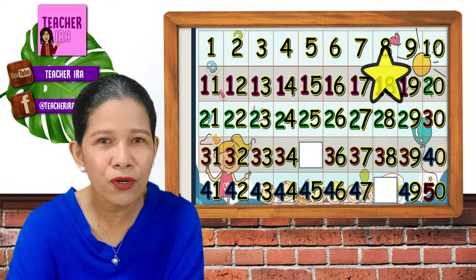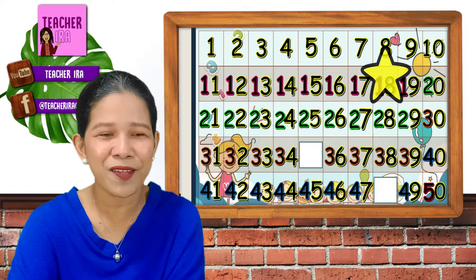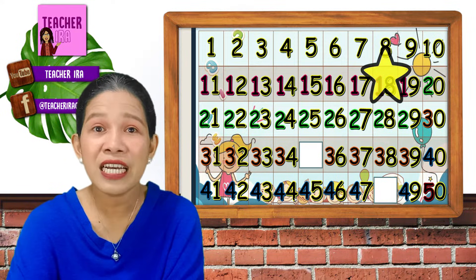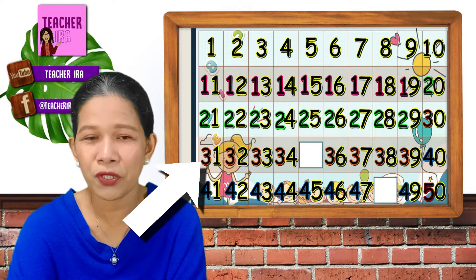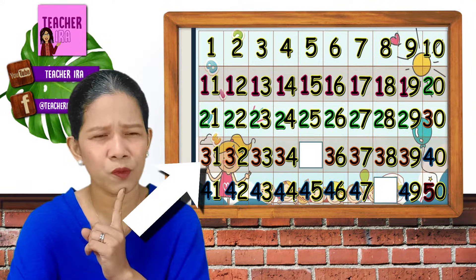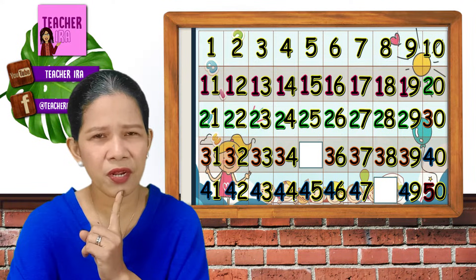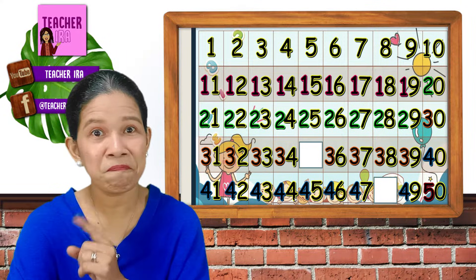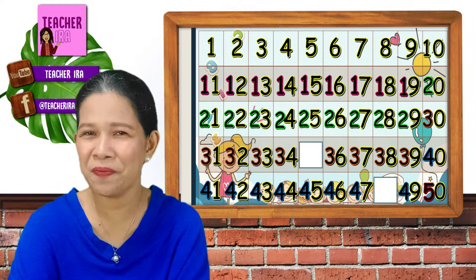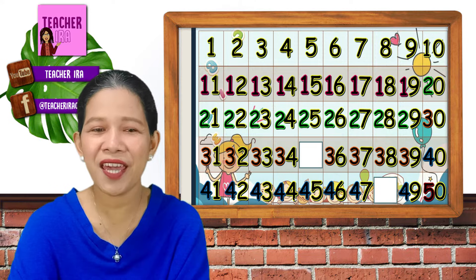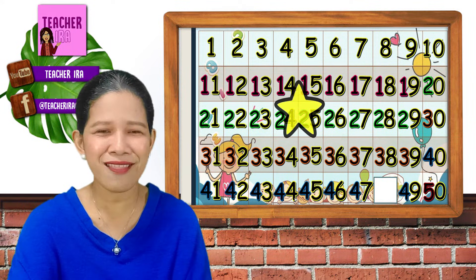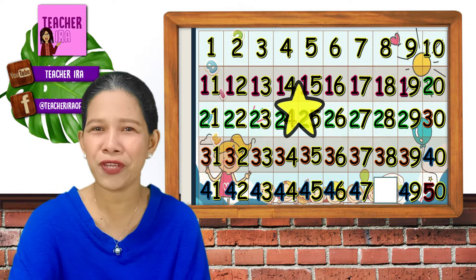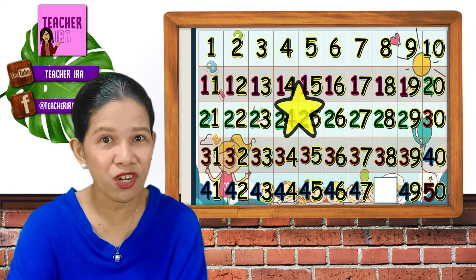Okay, now let's go to the next line. So, we have here from 31 to 40. What do you think is the missing one? Hmm, 1, 2, 3 — 3, 3, 3 — and then 1, 2, 3, 4. Correct. You made the right guess. It's 35. Wow, another star for you. Great job!